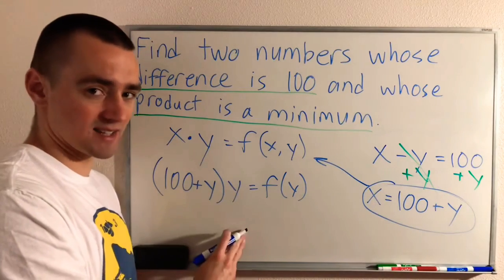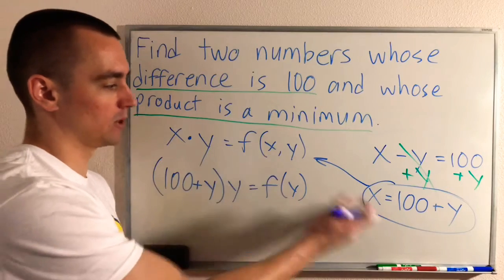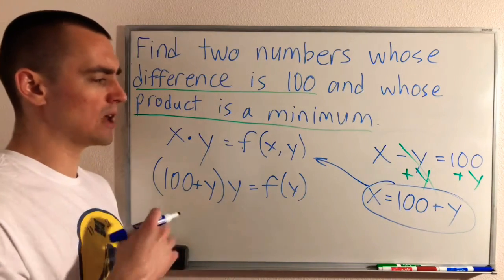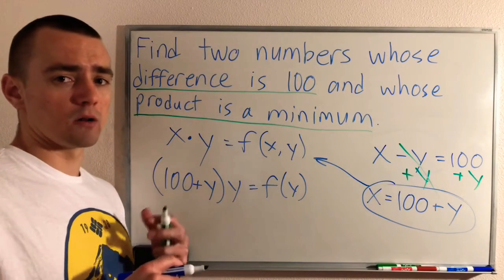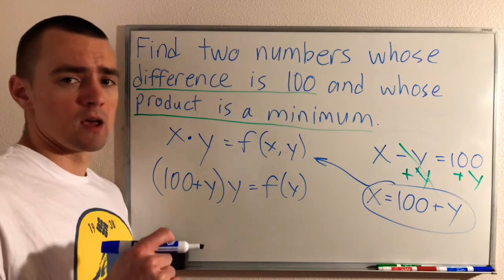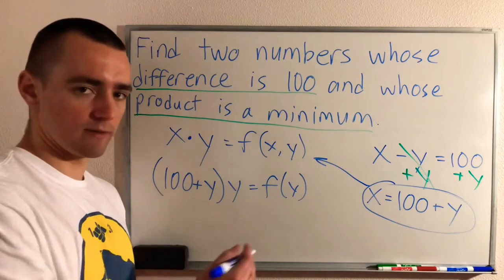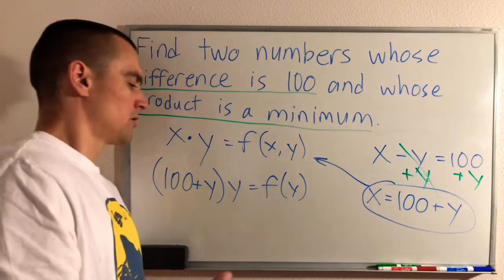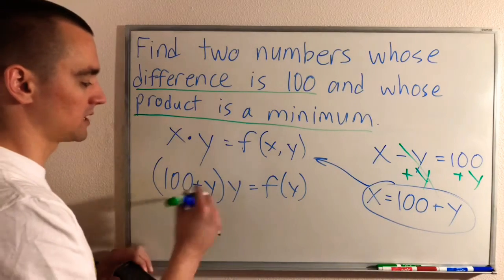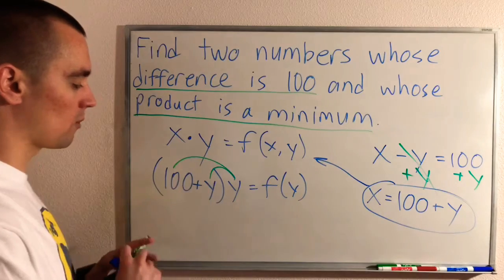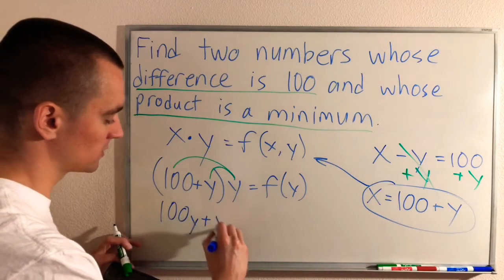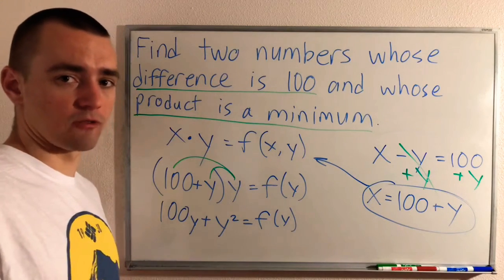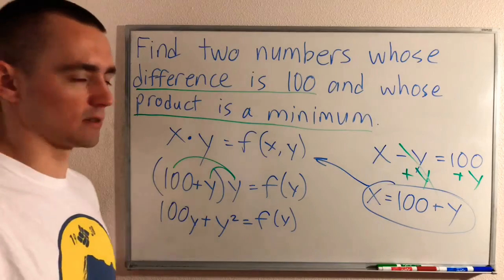Now our function only has y in it — we've eliminated x, giving us a single-variable function. We want to find the minimum of this. Expanding by multiplying y into the parentheses gives us f(y) = 100y + y². To find the critical numbers, which is the first step in finding minimum and maximum values, we take the derivative and set it equal to zero.